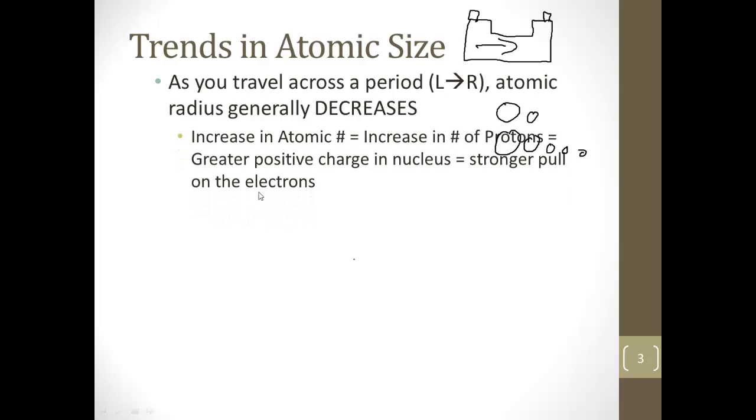Now, why is that? Well, the increase in atomic number means an increase in the number of protons. And that greater positive charge in the nucleus has a stronger pull on the electrons. So the electrons around it are being pulled in more because there's more positive charge in the nucleus. The nucleus gets stronger and pulls in the electrons more.